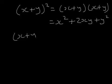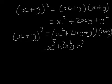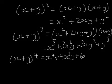Now let's think about x plus y to the power of 3. That's x plus y to the power of 2 times x plus y. That works out to be x cubed plus 3x squared y plus 3xy squared plus y cubed. x plus y to the power of 4 is x plus y cubed times x plus y, and it works out to be x to the fourth plus 4x cubed y plus 6x squared y squared plus 4xy cubed plus y to the power of 4.